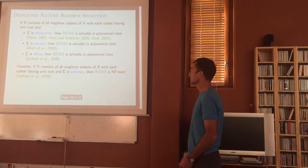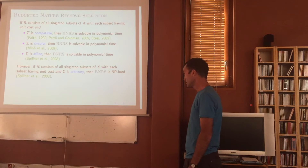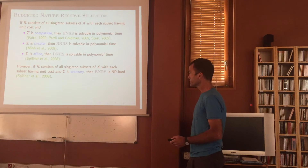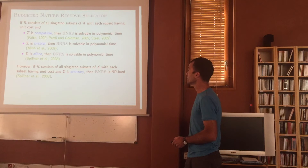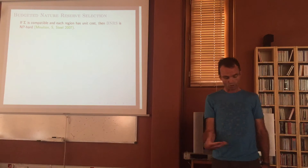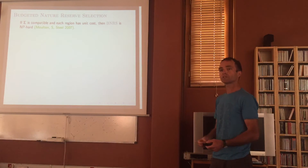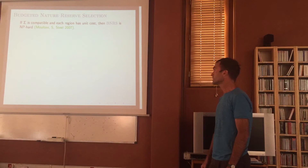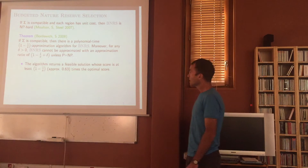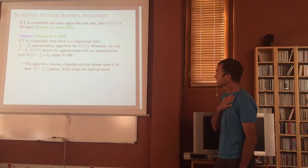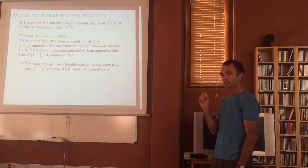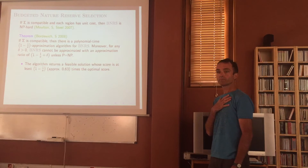In general, the problem is hard. If the split system is arbitrary, it's hard. If sigma is compatible (all splits arise from a tree) but regions are not necessarily singletons and each region has unit cost, it's still hard. Magnus and I showed in 2008 that if sigma is compatible — without necessarily requiring unit cost — there is a polynomial time (1 − 1/e) approximation algorithm for the problem.